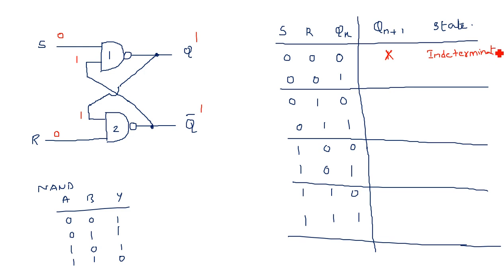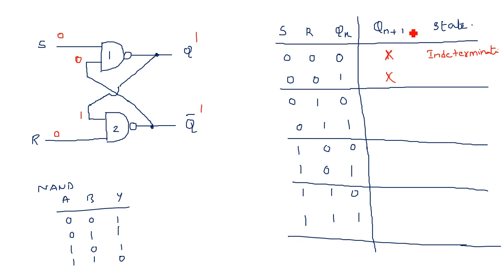For the second sub-case of S=0, R=0 with Qn=1: Q-bar=0, so NAND gate inputs are 0 and 0, output is 1. That 1 feeds into the second gate with R=0, again giving output 1. Both outputs are 1 again, giving the same indeterminate state. We cannot write Q(n+1) as 0 because that would imply Q(n+1)-bar as 1, which is contradictory — so the output is represented as a cross mark for indeterminate state.